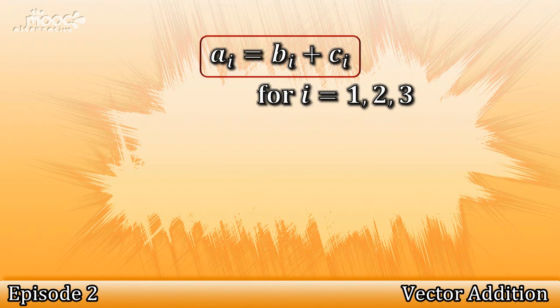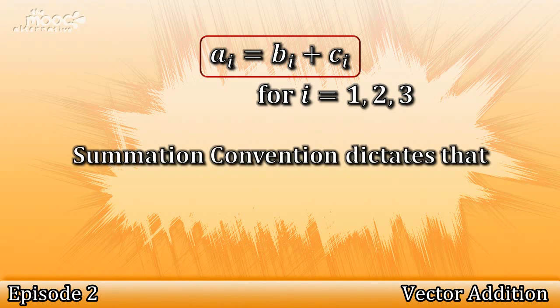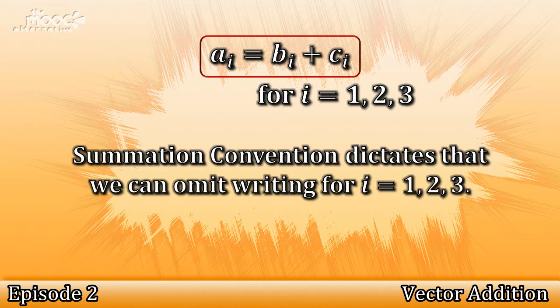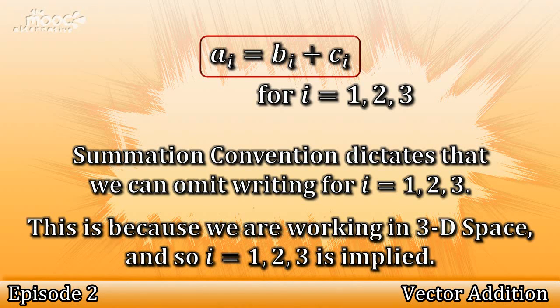This is where we will introduce Summation Convention. Summation Convention omits writing 'for i = 1, 2, or 3.' Remember, we're working in three-dimensional space, hence 1, 2, and 3.